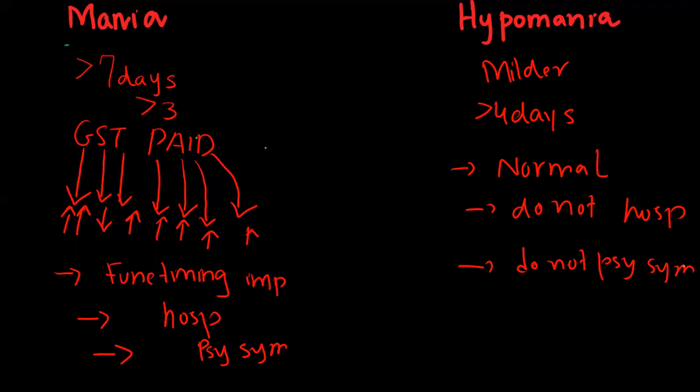The major difference between mania and hypomania is the severity and duration of symptoms. In mania, the duration is more than seven days; in hypomania, the duration is more than four days. The symptoms in mania are very severe, with occupational and functional impairment.